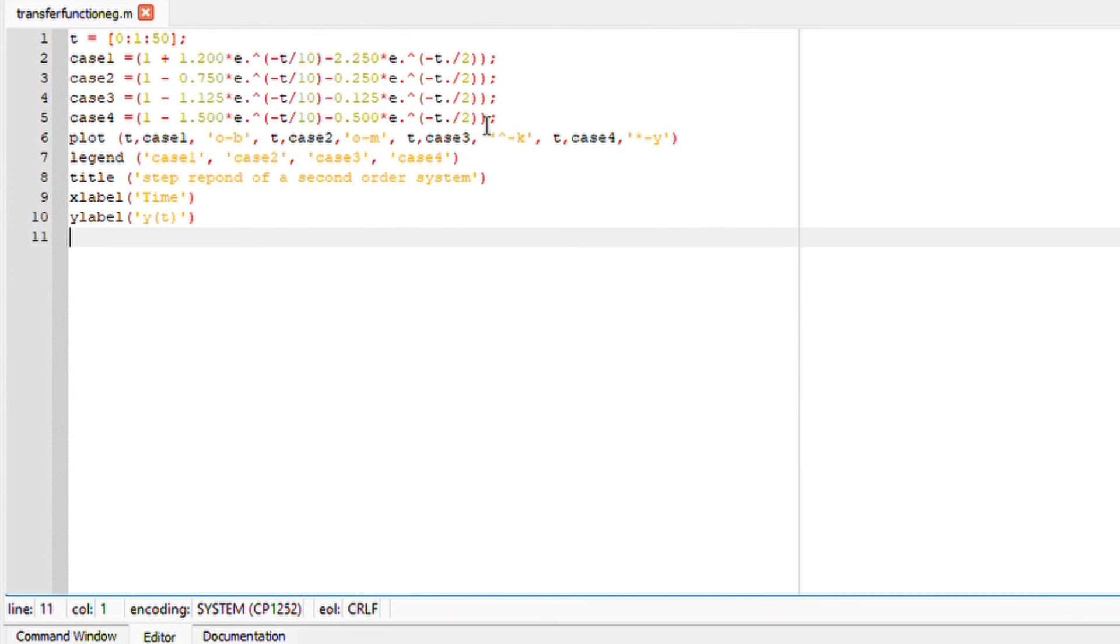For case 1, it will be plotted as circles, solid line, and blue. For case 2, I'm going to plot it as circles, solid line, and purple or magenta. Case 3 we can make black, and for case 4 we can make it yellow.